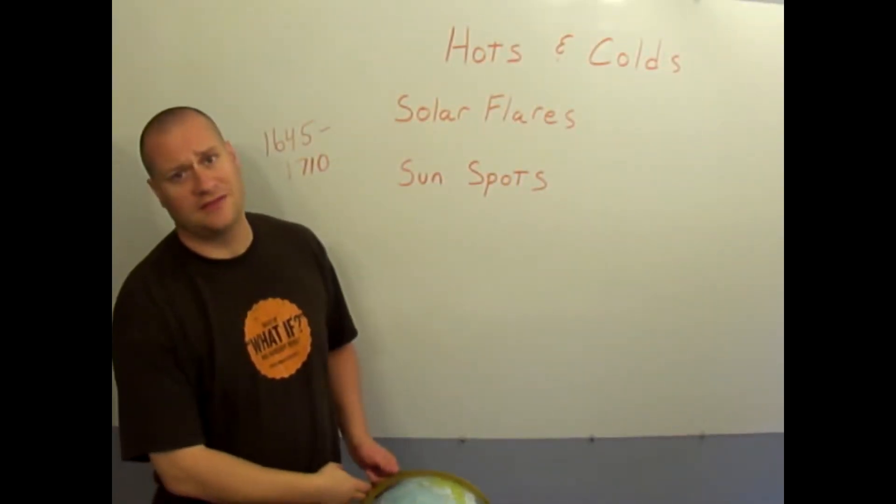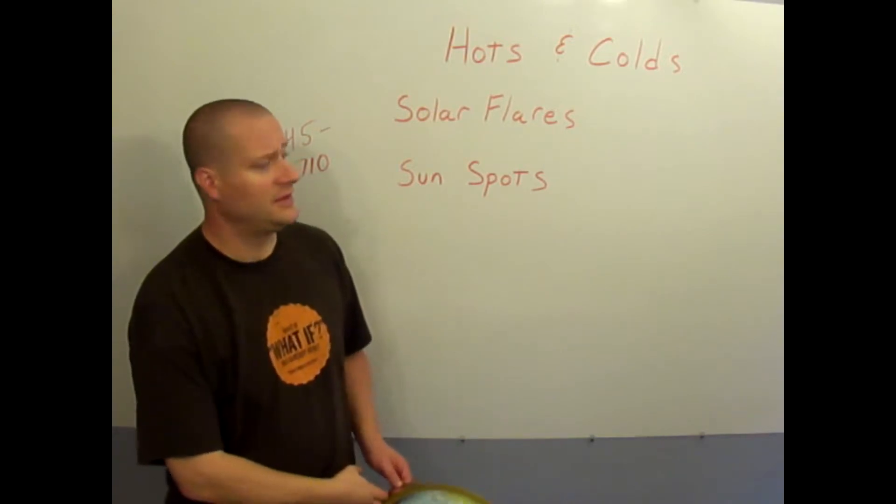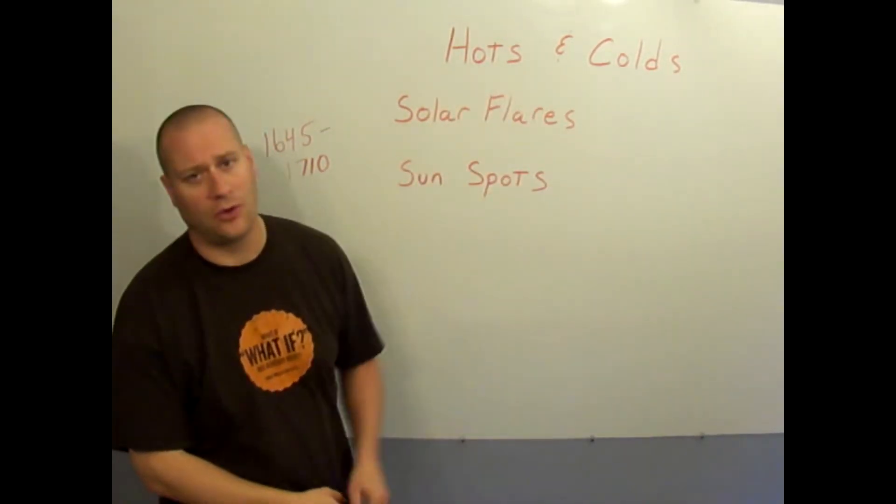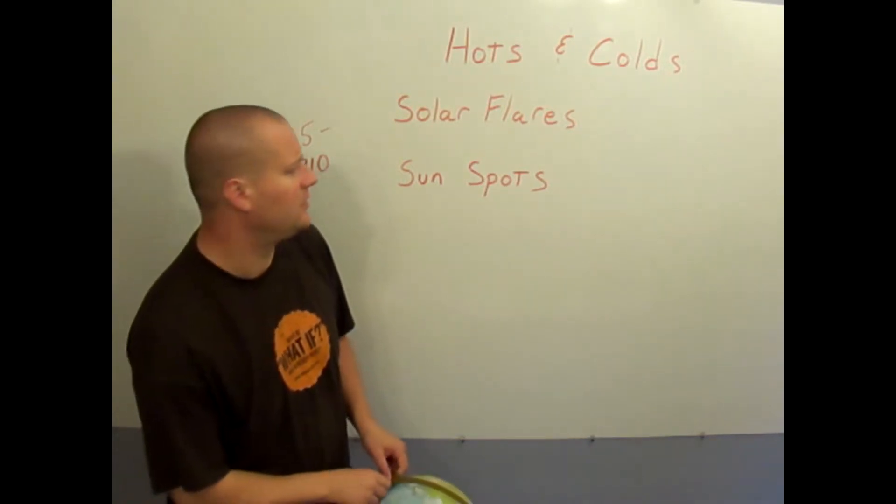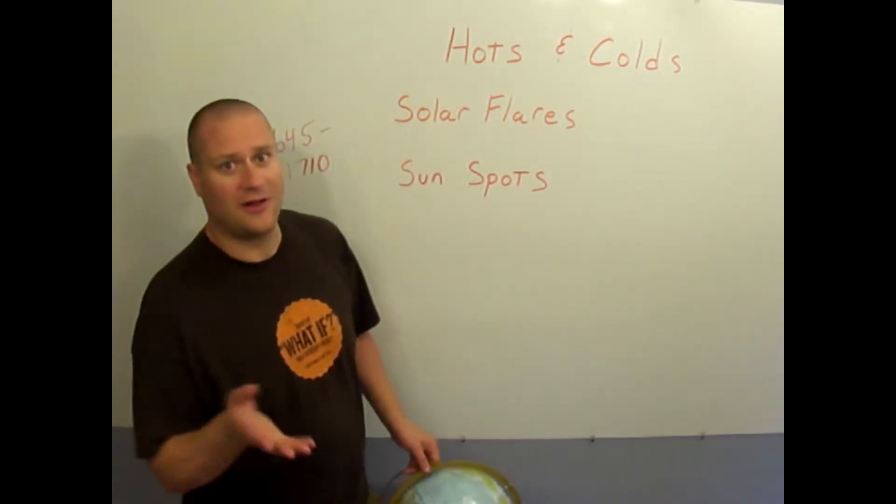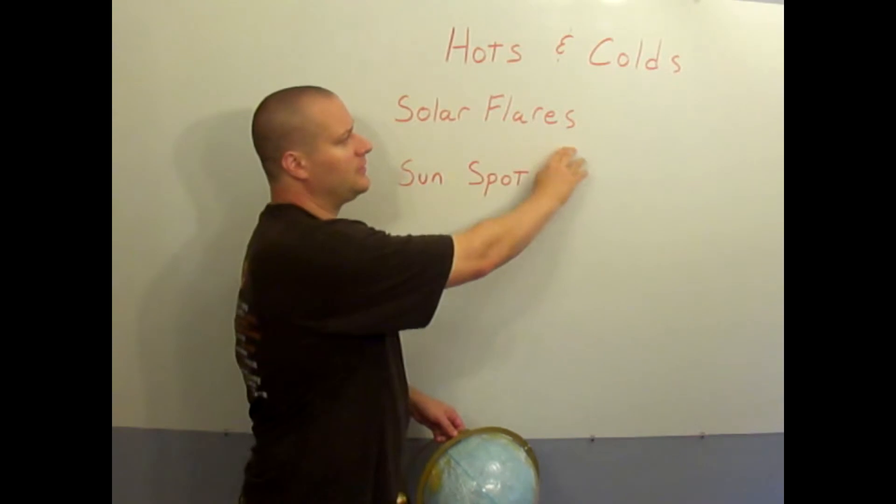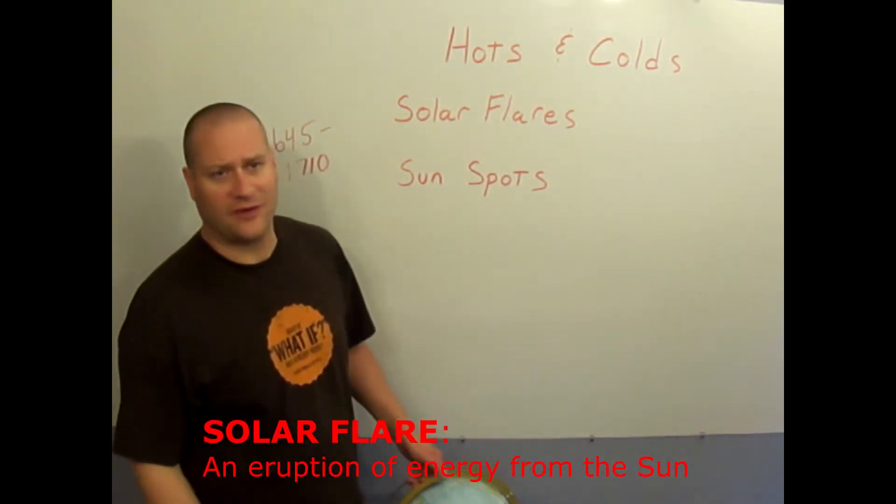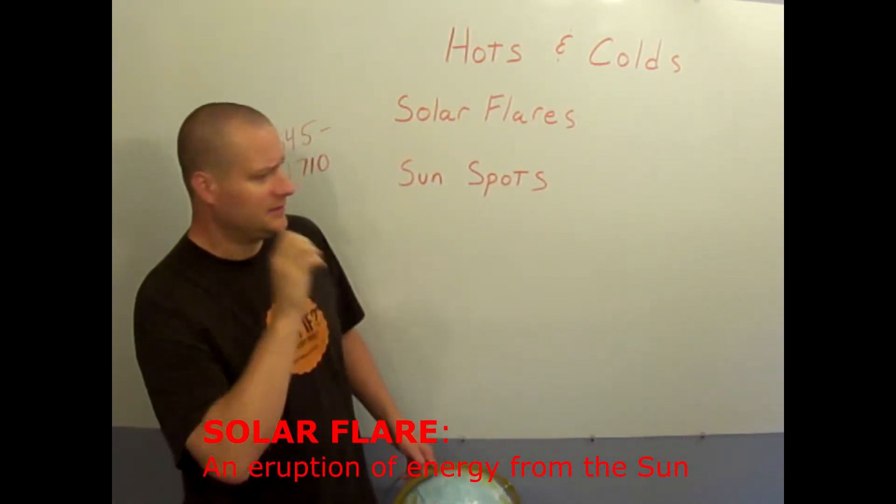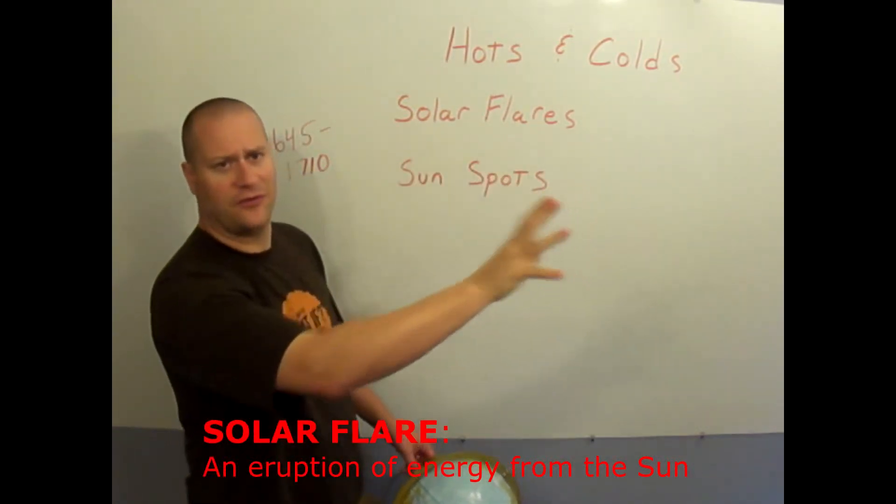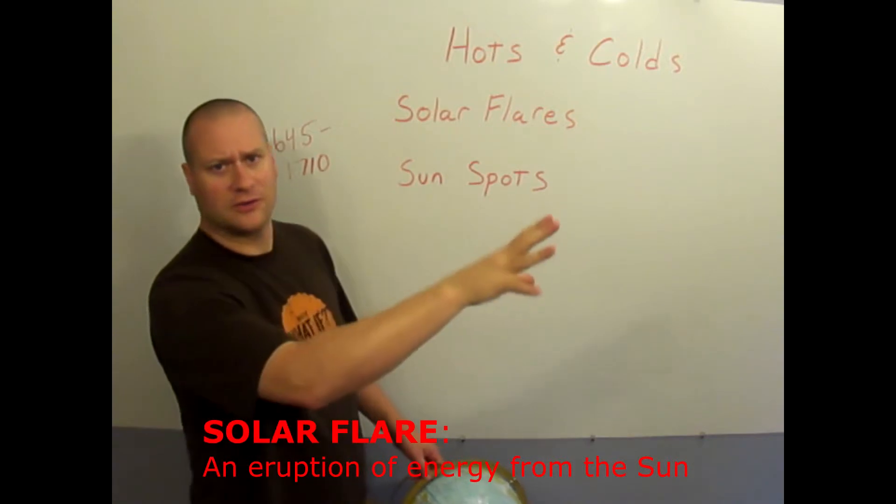A couple of things that the sun does that I want to talk about in terms of hots and colds. There's some phenomena or some activity that happens on the sun that's worth noting. The first of which I'll call it the hots, are solar flares. Solar flares are almost like a volcano or a burst of energy or an eruption out of the sun that shoots out a shockwave of force and lots of particles from the sun.